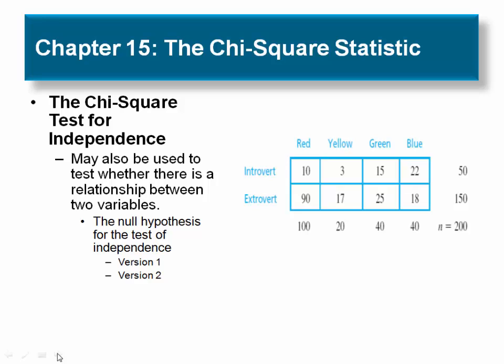The null hypothesis for the chi-square test for independence states that the two variables being measured are independent. That is, for each individual, the value obtained for one variable is not related to or influenced by the value for the second variable.